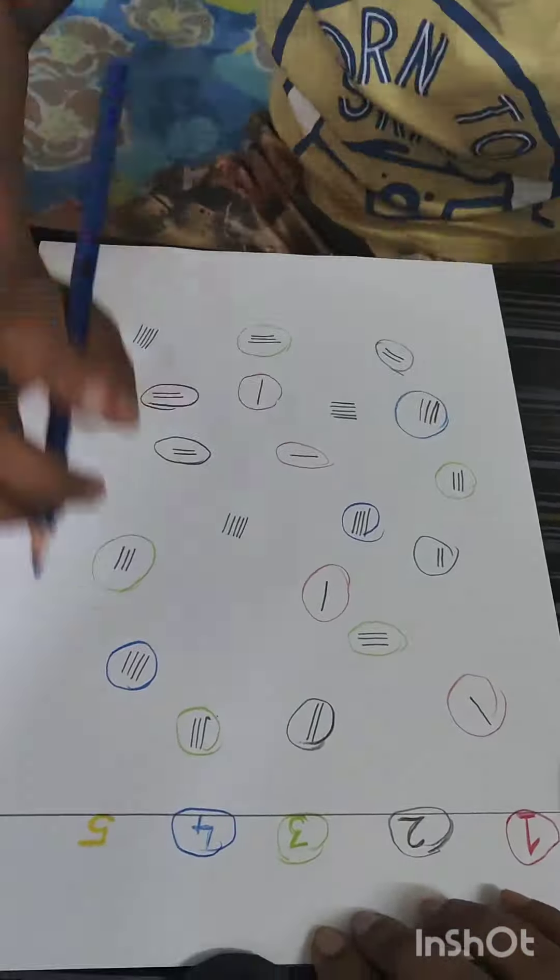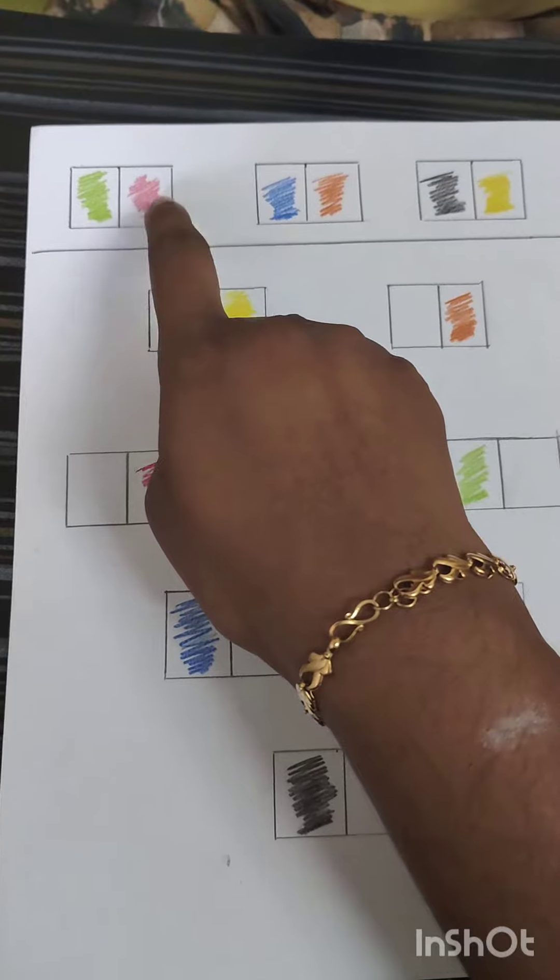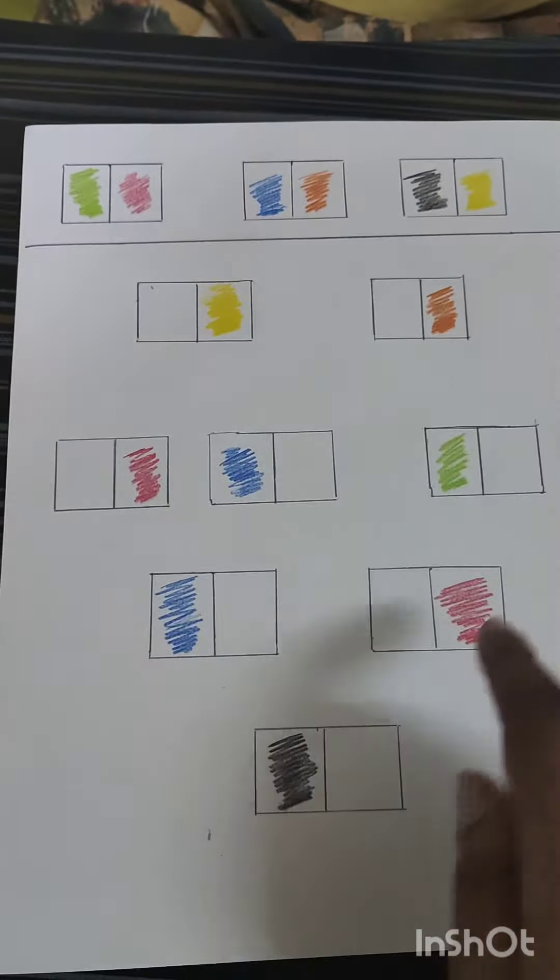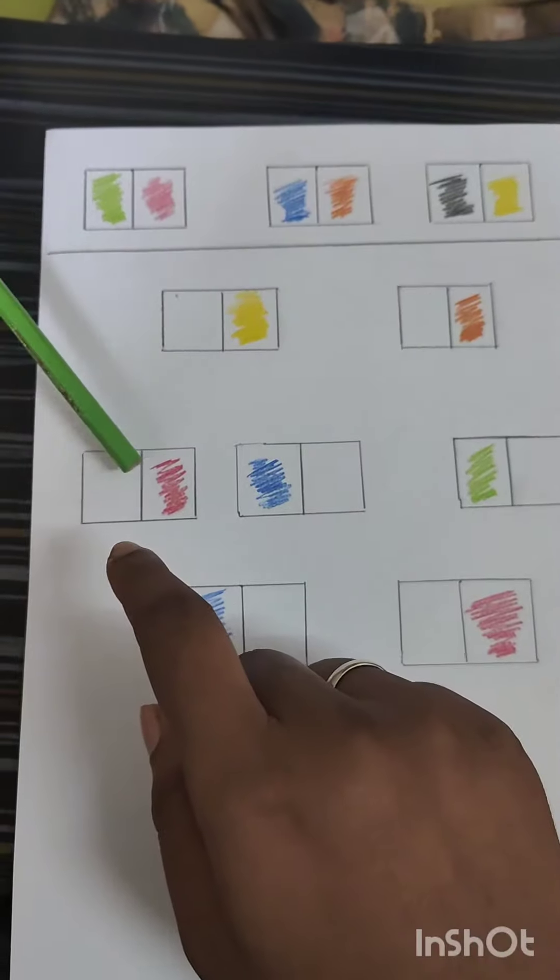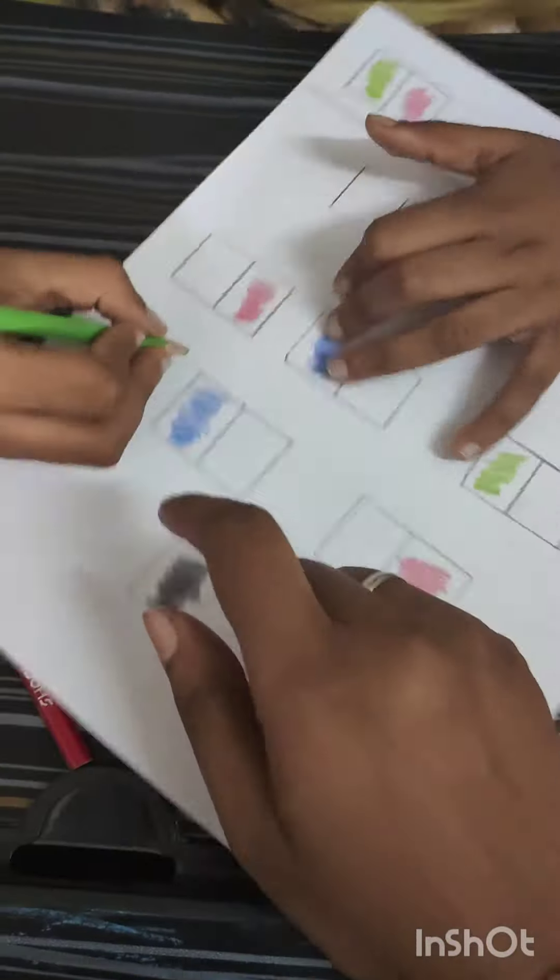Now this is the second worksheet. Okay, here you can see green, red. Okay, so tell me where is the red color? Show me, show me. Yes, so here you will do green. Yes.